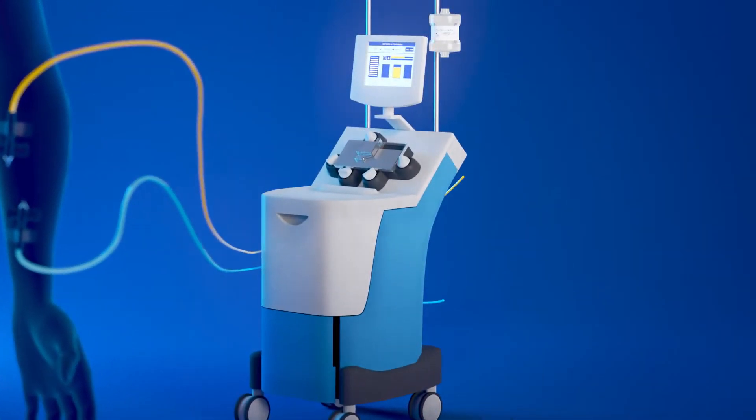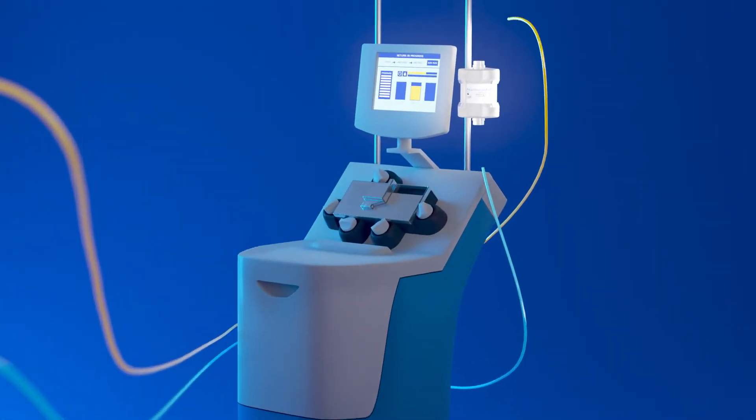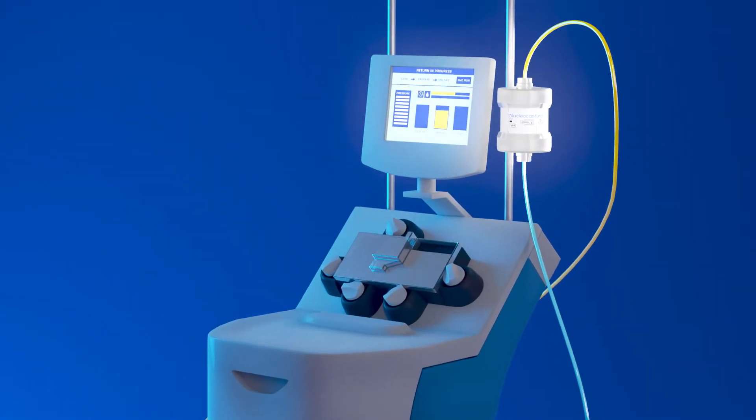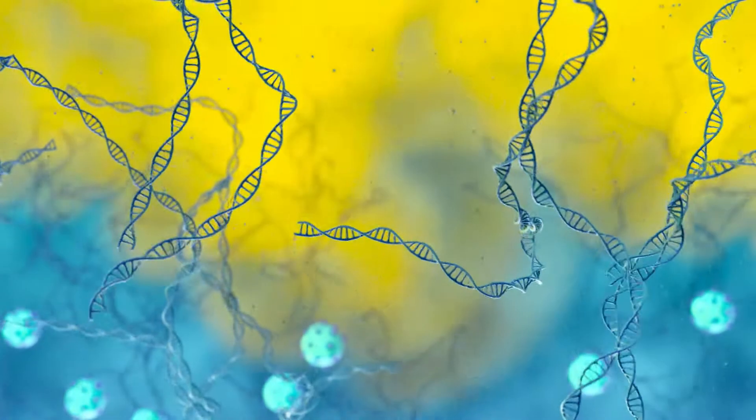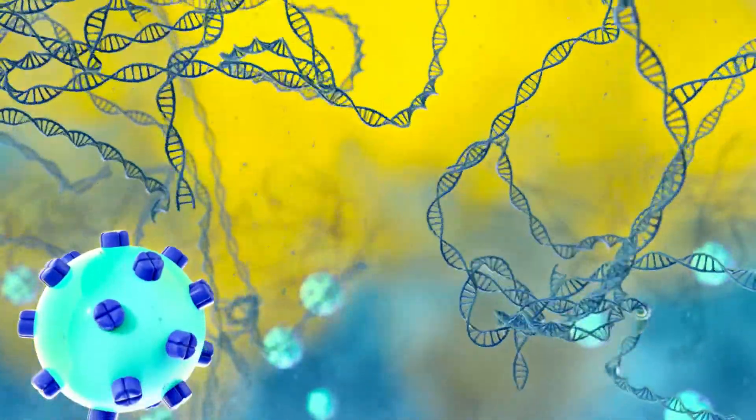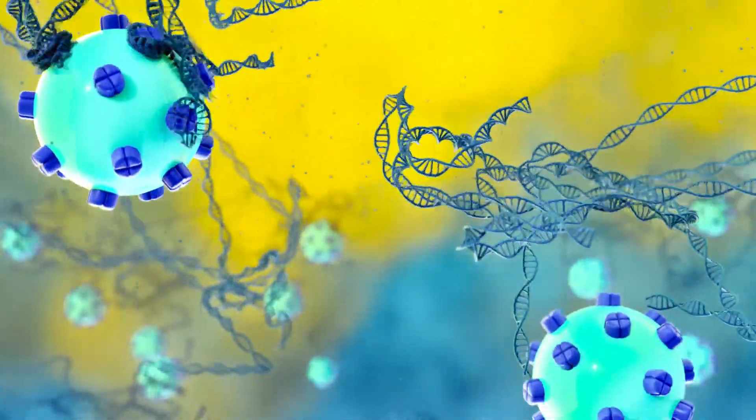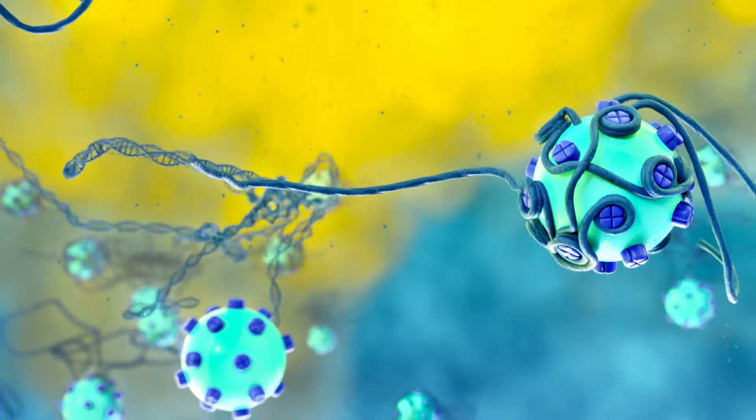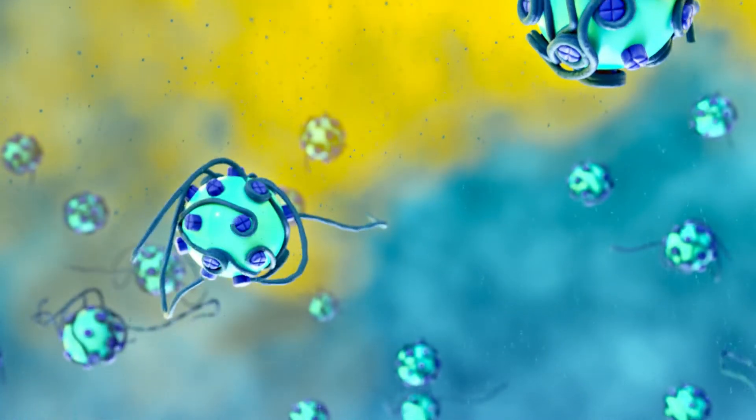A single pass of NET-contaminated blood through the nucleocapture device results in 95% clearance of NETs from plasma. The cell-free DNA binds to the conjugated histone complexes with single-digit nanomolar binding constants.